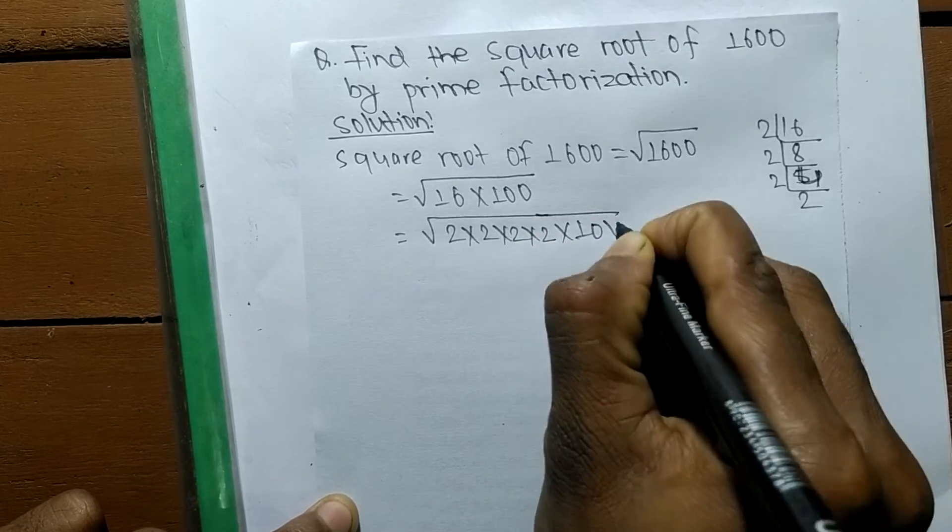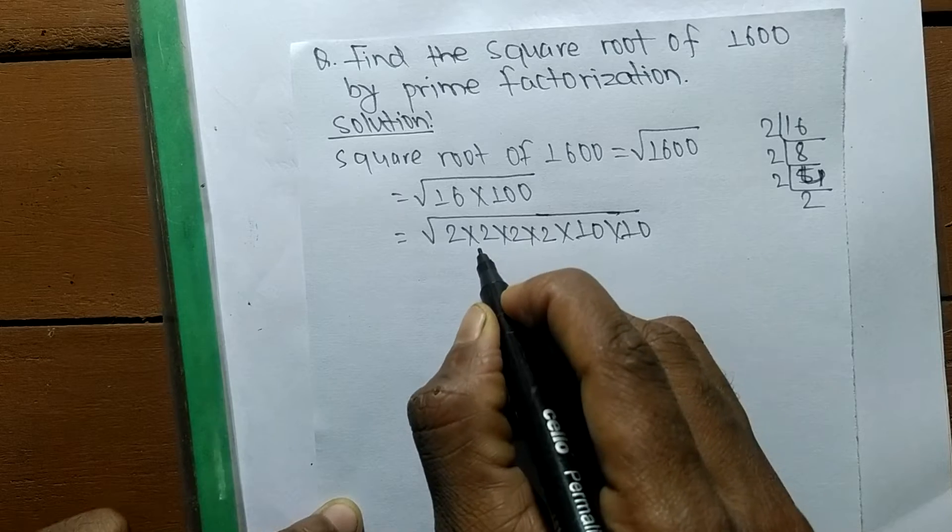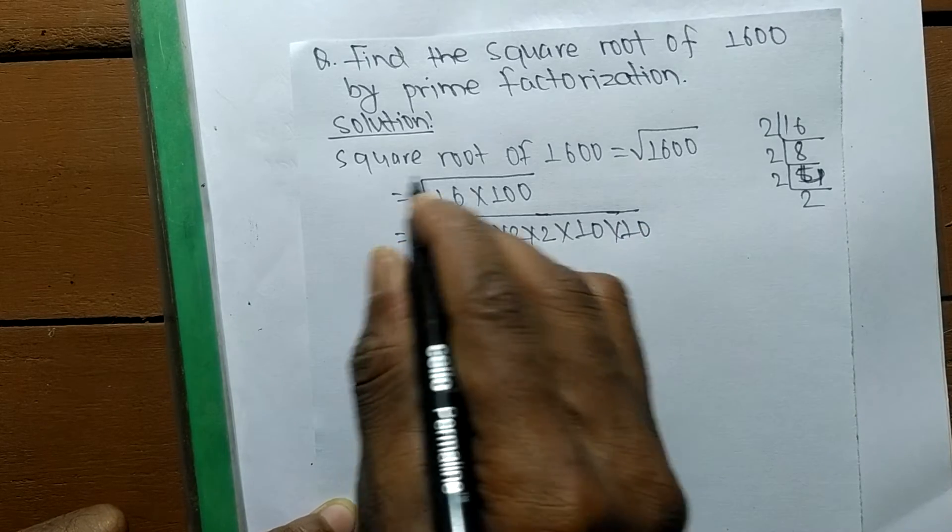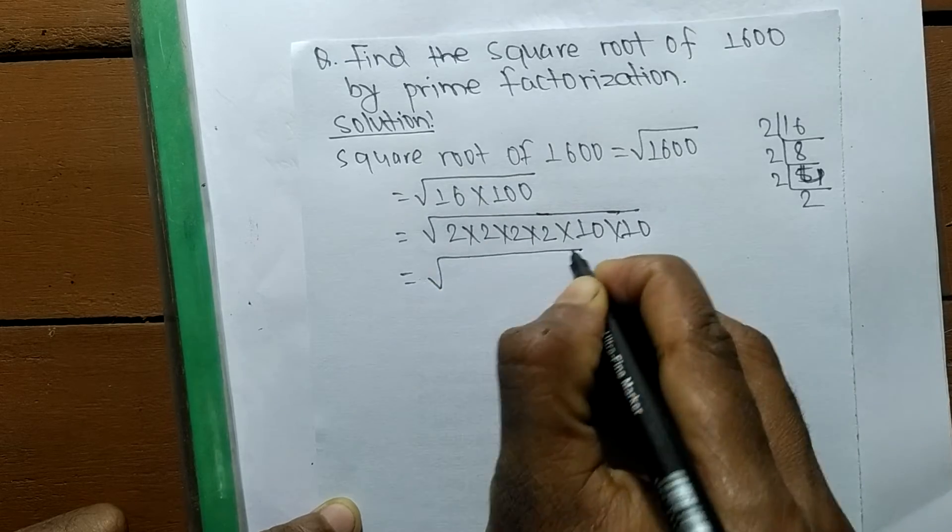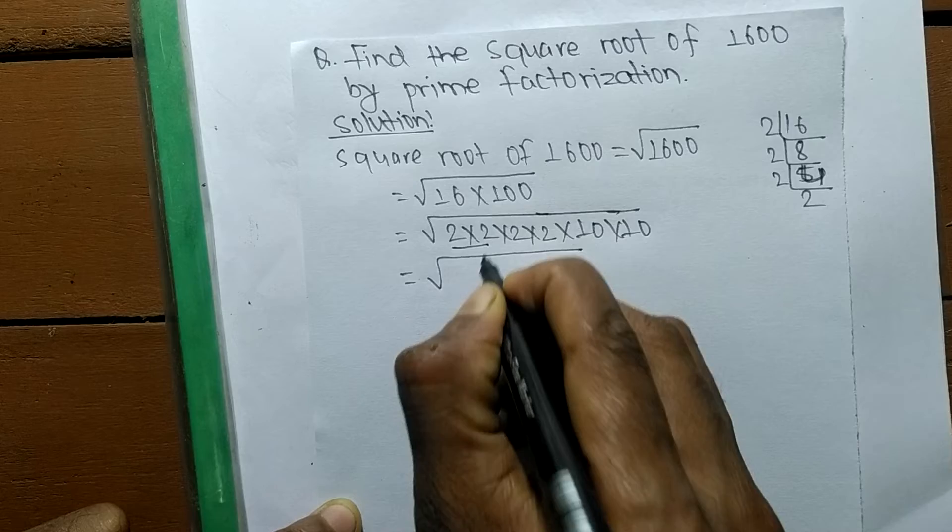We are finding a square root, so we make these prime numbers into a square. 2 into 2 means 2 squared, 2 into 2 is 2 squared.